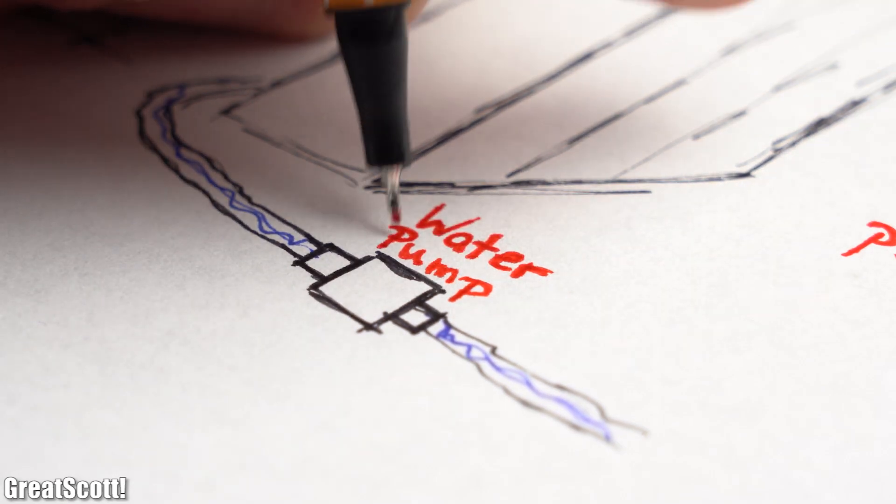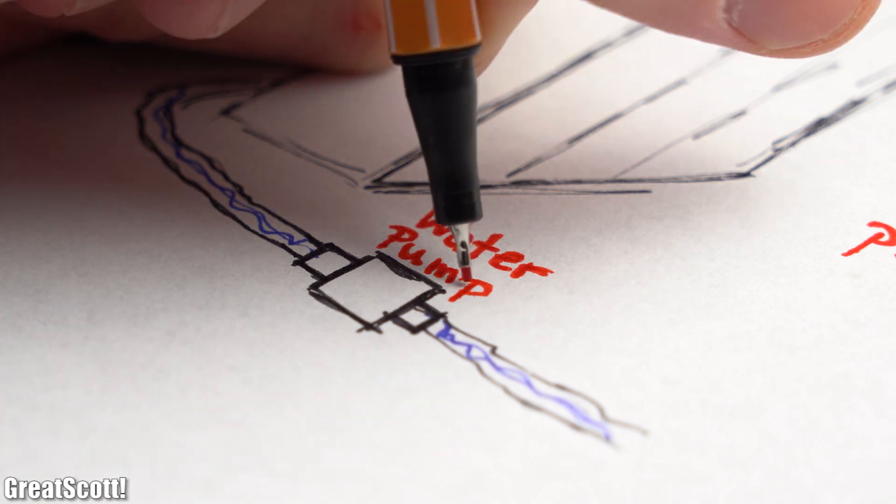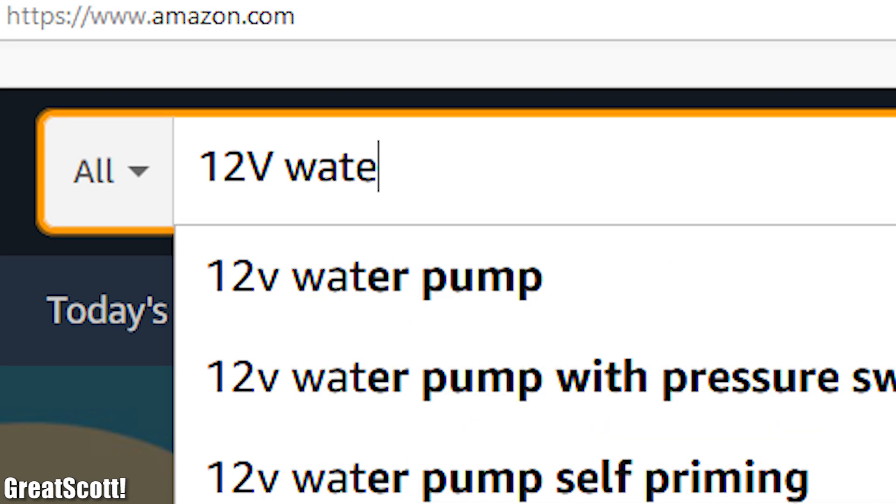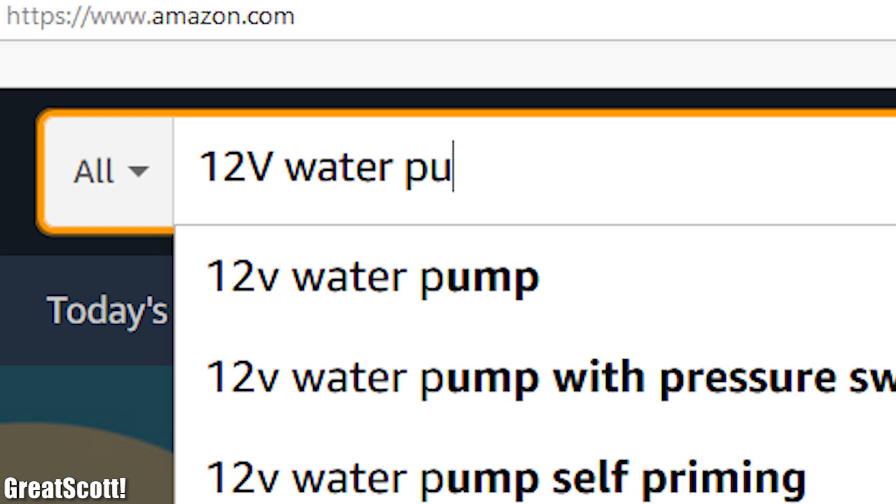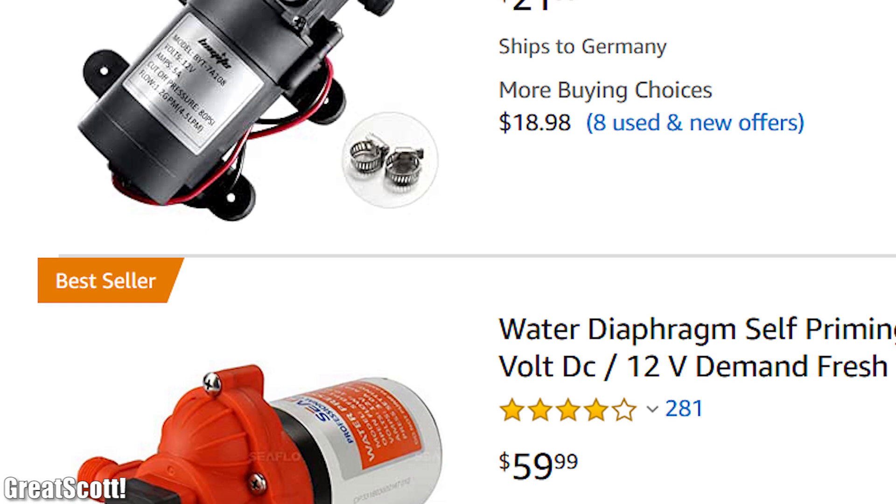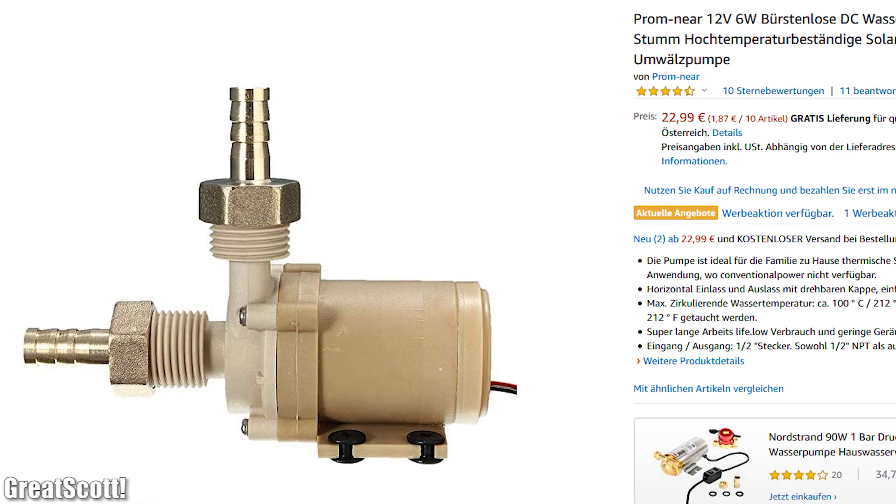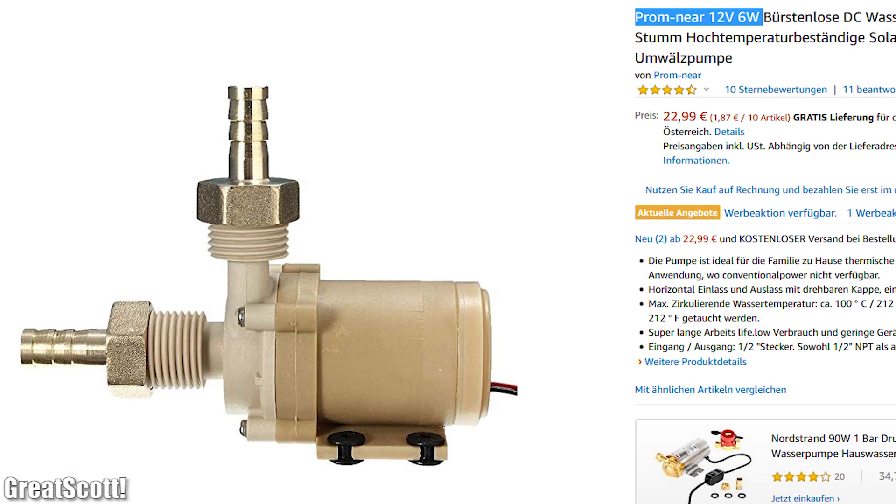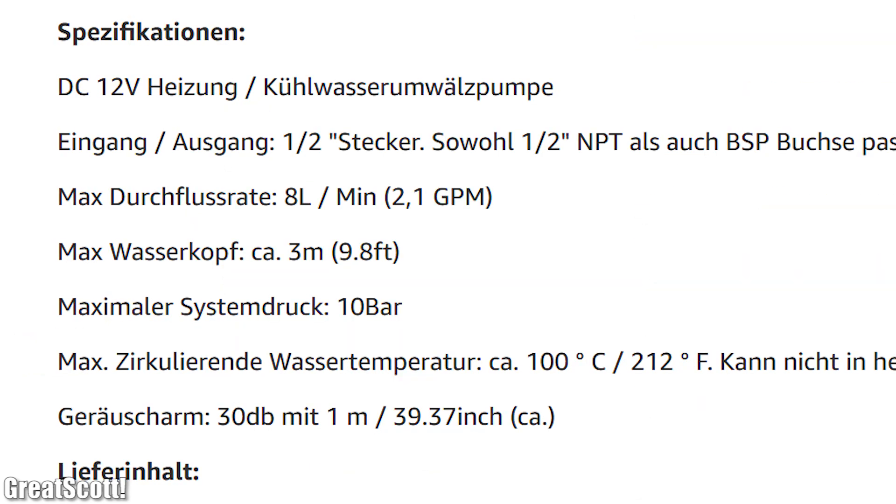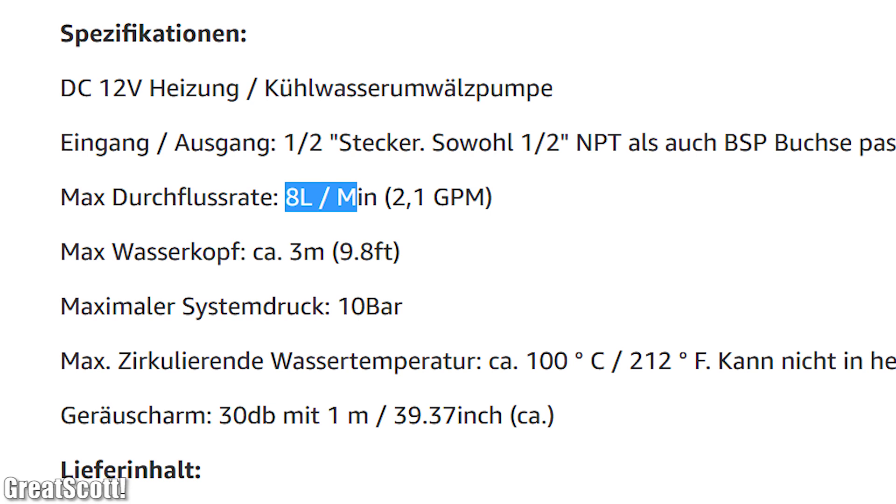For such a watering system I would of course require some sort of water pump, and that was the moment I started searching for 12-volt DC ones on Amazon. But as you can see, the selection is not that huge, and thus I was more or less forced to go with this 12-volt 6-watt one which according to its product description can do 8 liters per minute.